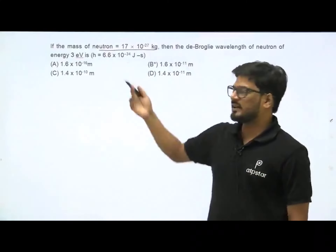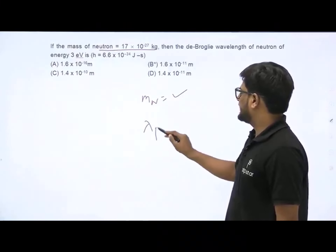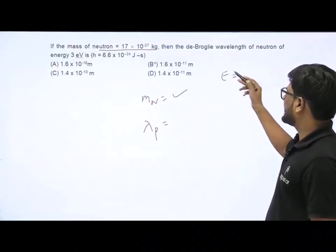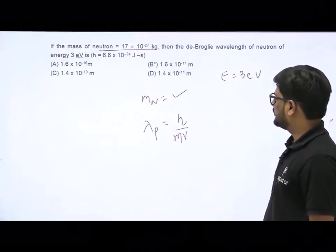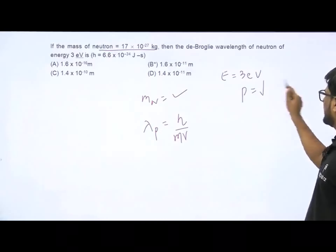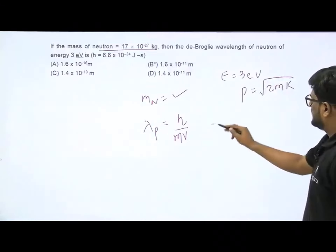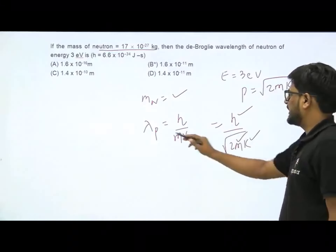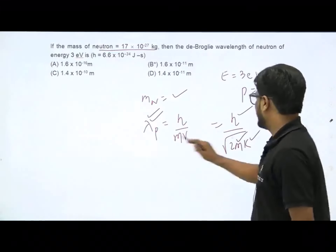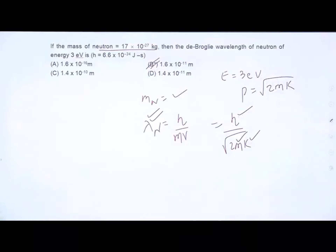Next: given mass of neutron is M_n, find the de Broglie wavelength of a neutron with kinetic energy K = 3 eV. De Broglie wavelength = H/p = H/√(2MK). With H known, mass of neutron given, and K = 3 eV, solving gives lambda ≈ 1.6 × 10⁻¹¹ meters. This is a basic application of de Broglie's wavelength formula.